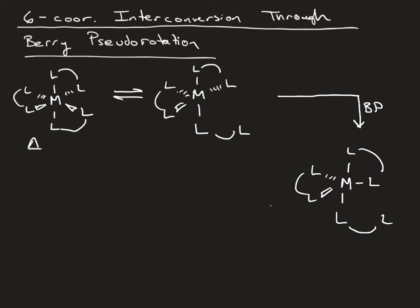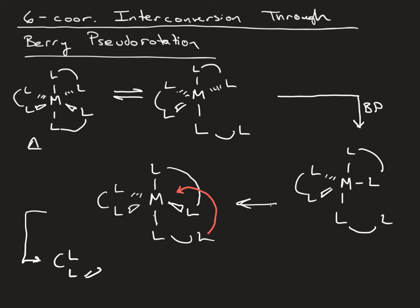In which case we would get something like this. And then we would reform our square pyramidal species. And this ligand down here would come up, snapping into place in the back, forming your lambda isomer.